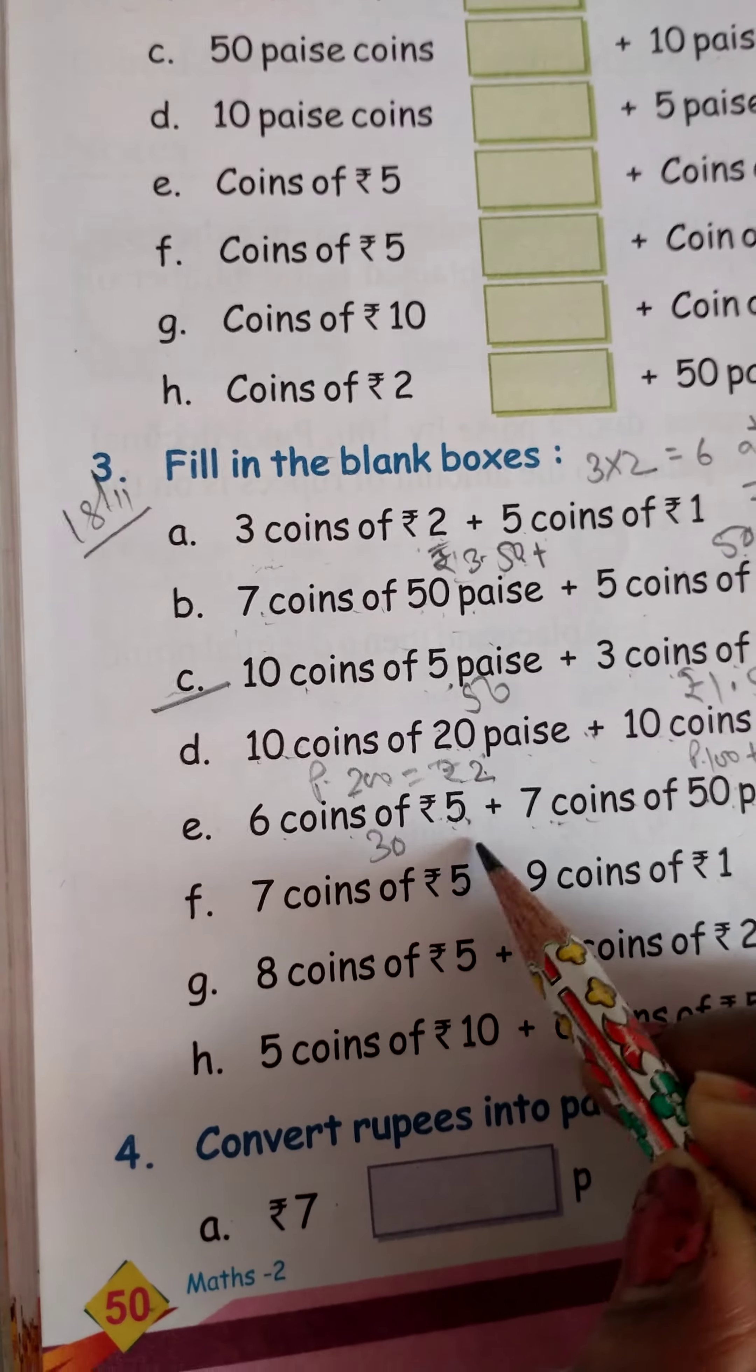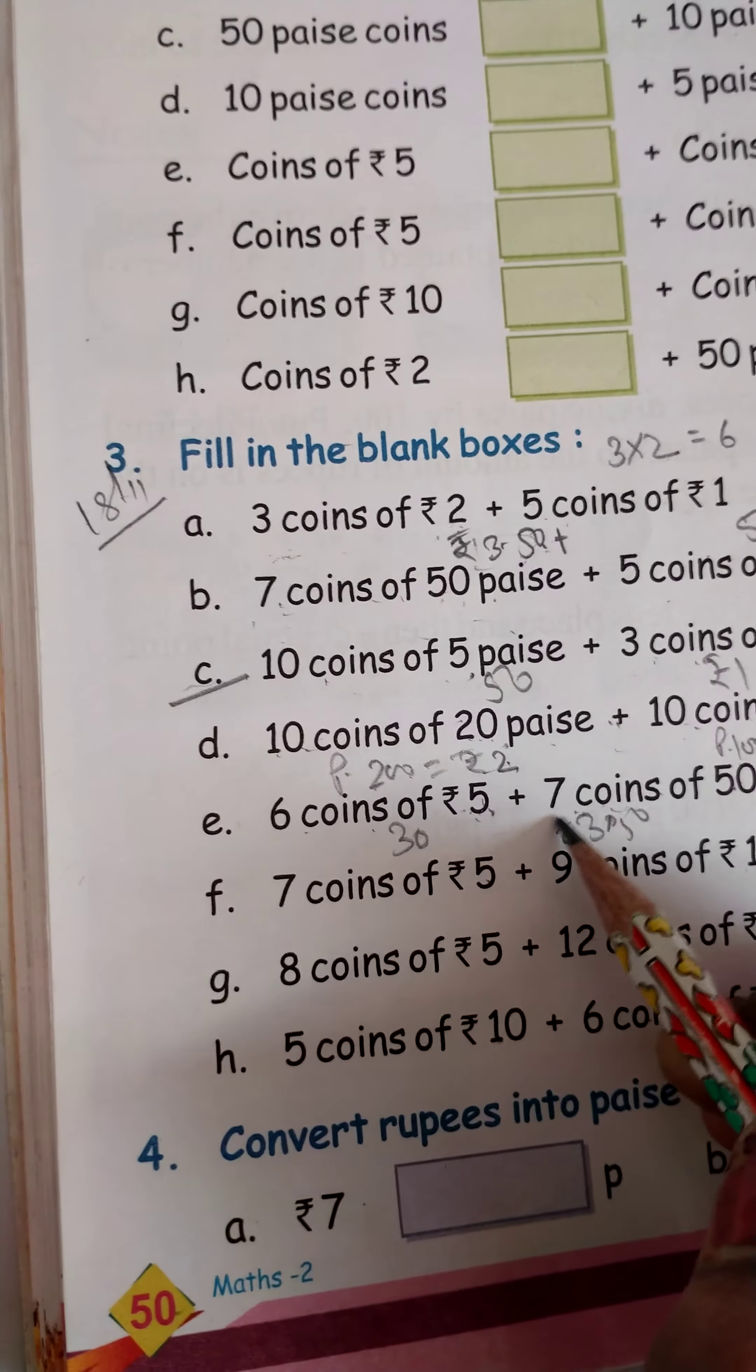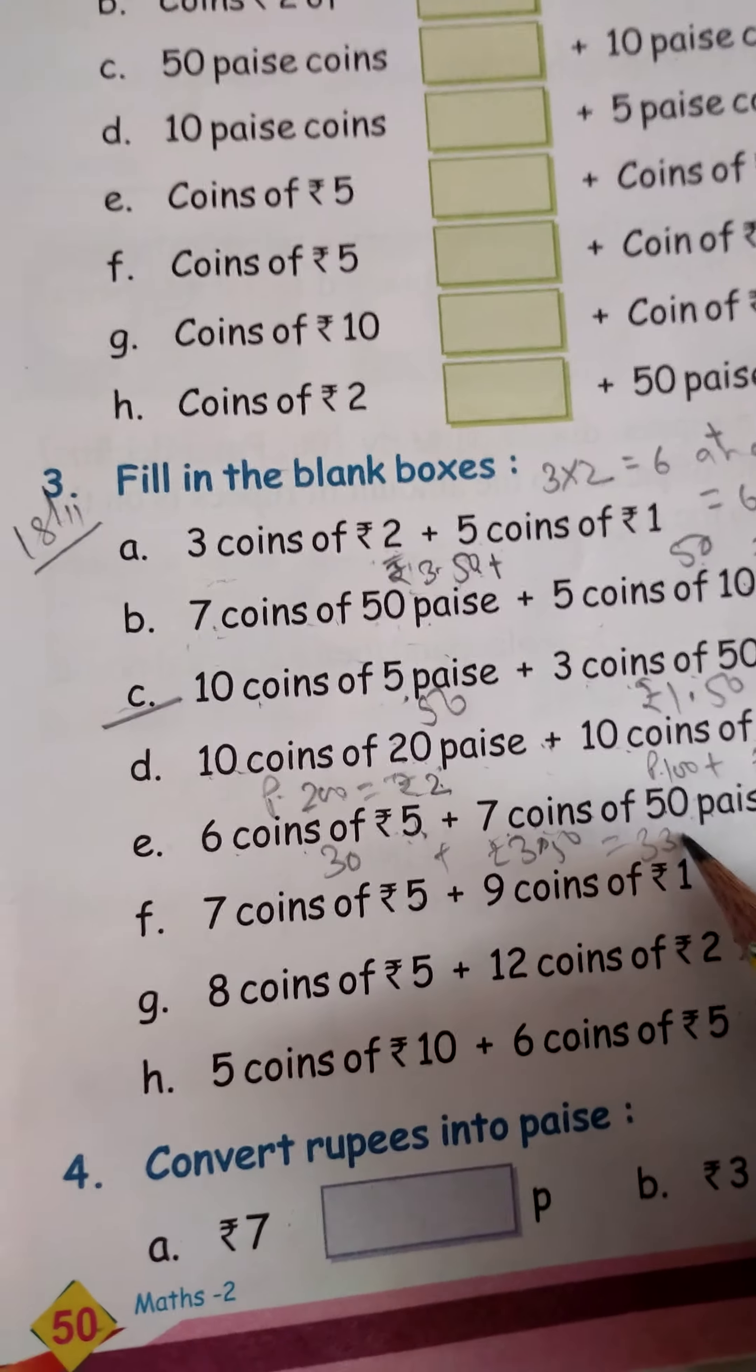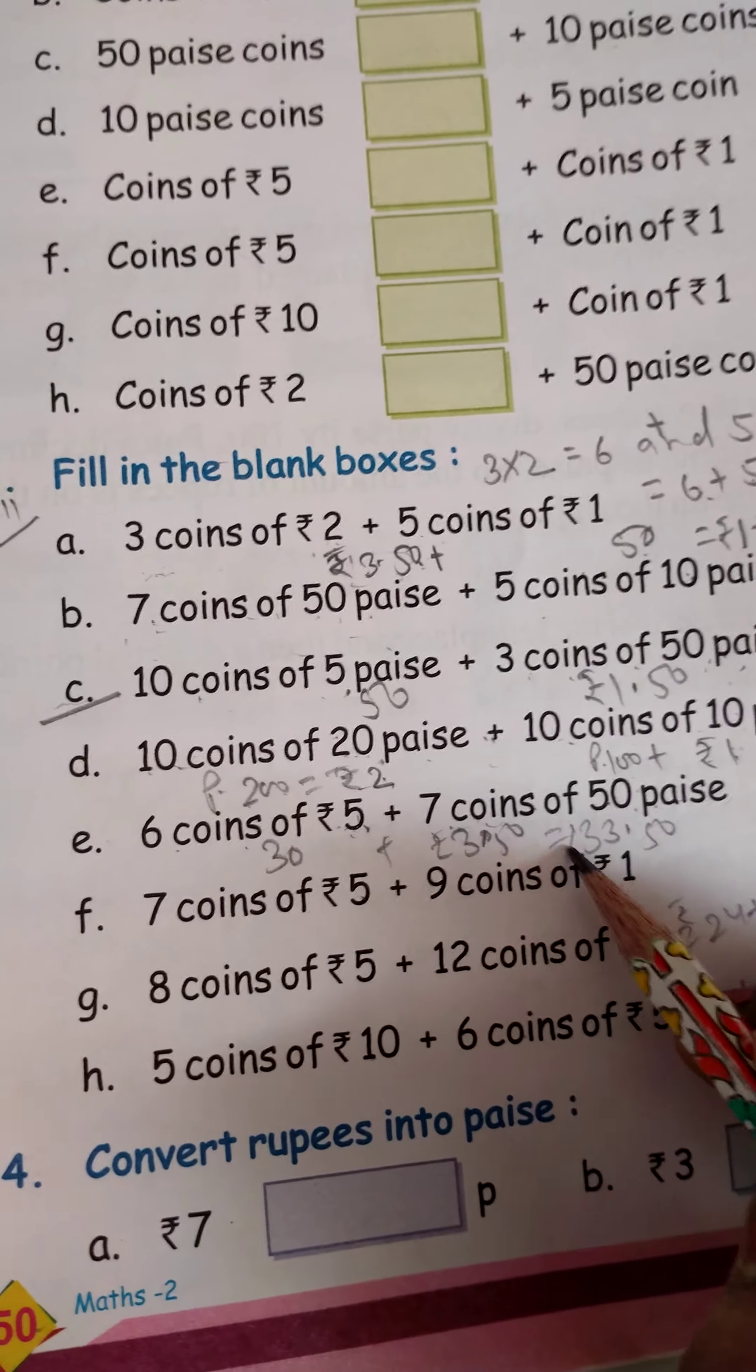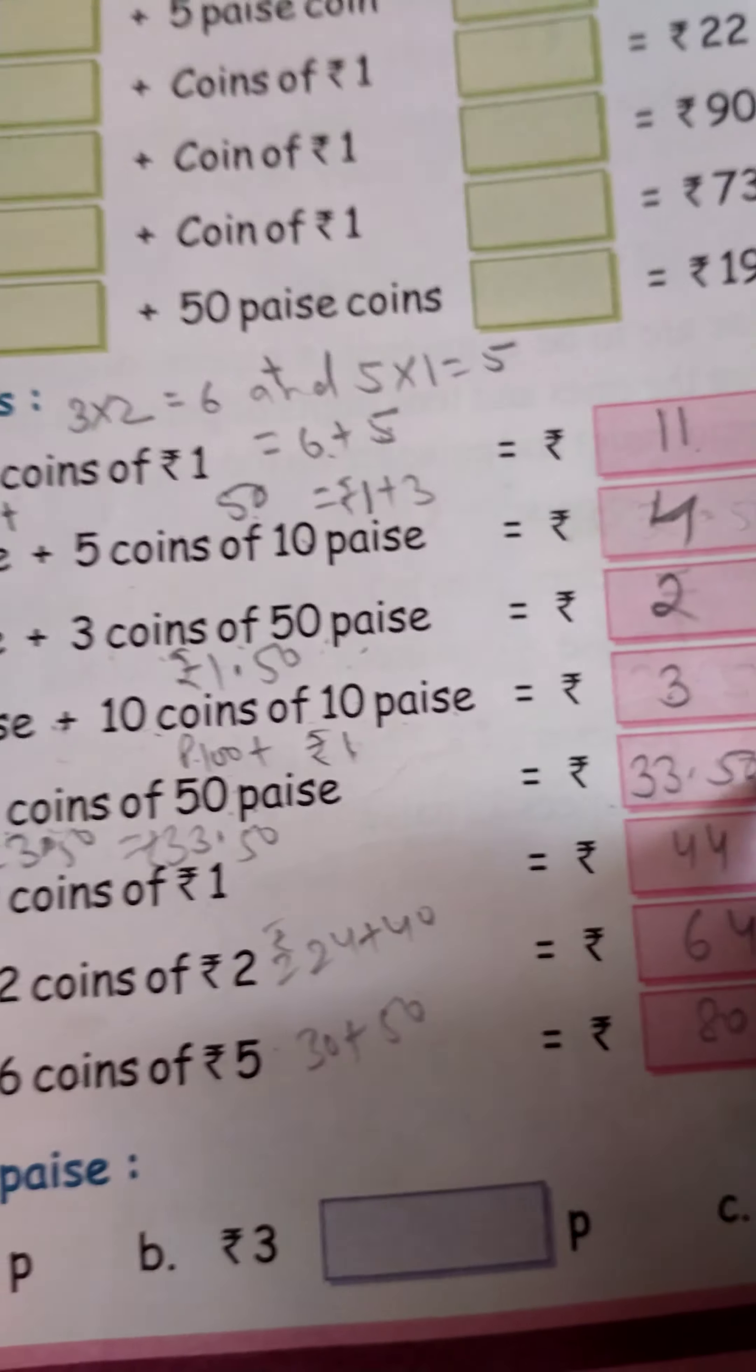So in 30, we will add 3 plus, which gives us 30 rupees and 50 paise. So 6 coins means rupees 33 plus 50 paise.